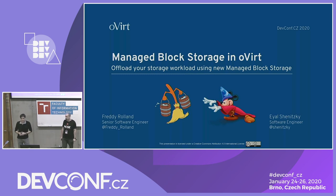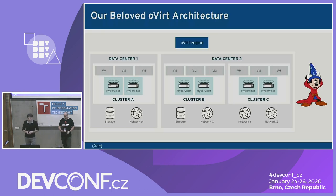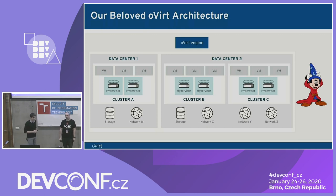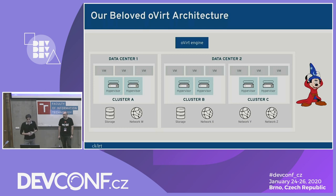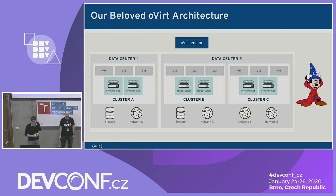Today we're going to talk about the new managed block storage in Ovid and how you can offload all your storage operations to the storage backend itself. Ovid is an open source virtualization platform that allows you to manage and orchestrate virtual machines. As you can see in the diagram, we have the Ovid engine, which is the management application written in Java. In Ovid you can have multiple data centers, each containing multiple clusters, and in each cluster you can have several hypervisors running multiple VMs. Each data center must also have shared storage and virtual networks.